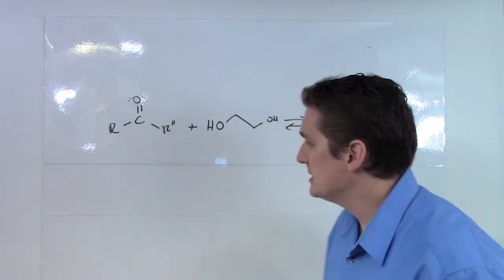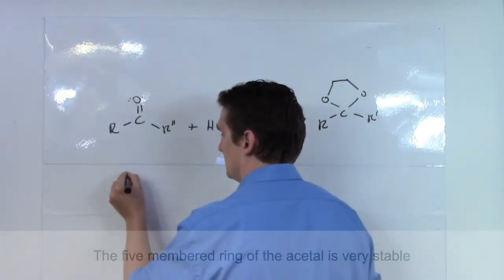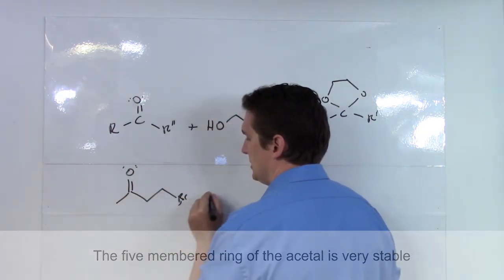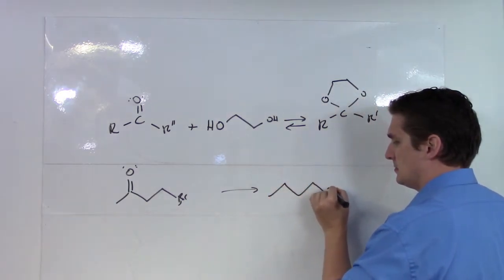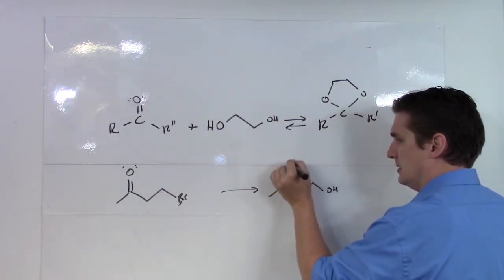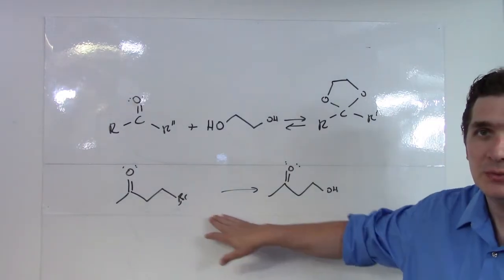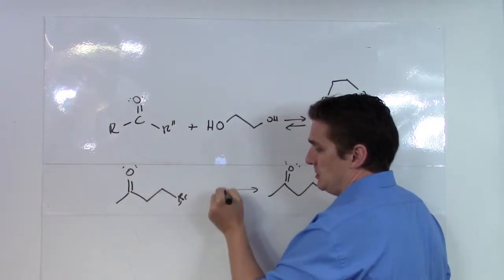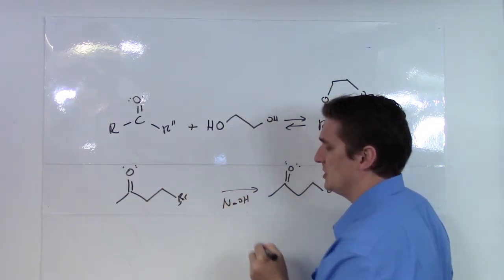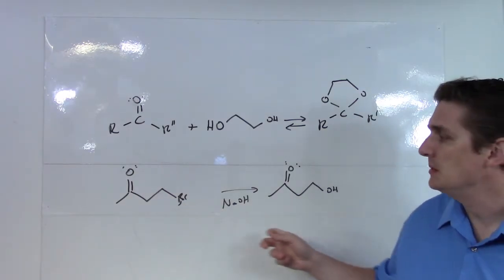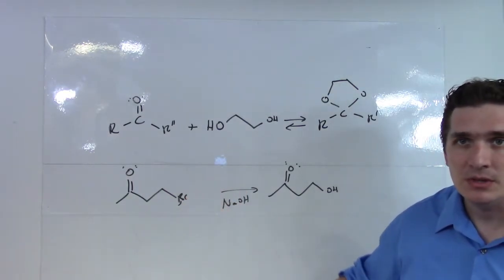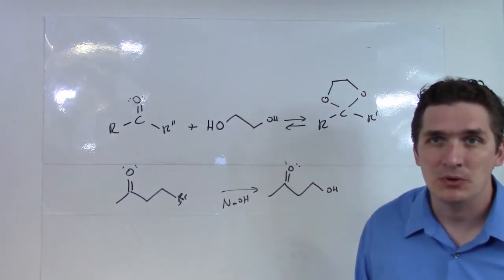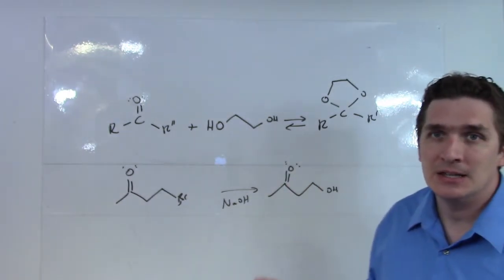So why would we want to do this? Let's say we have this compound here and we want to produce this complex — we want to take our bromine and replace it with an OH group. Well, if the ketone wasn't there, we would just run this under sodium hydroxide. Sodium hydroxide is going to displace the bromine and give us that product. But if we do this, there's a very good likelihood that we'll end up further deprotonating the OH group, which will turn around and react.